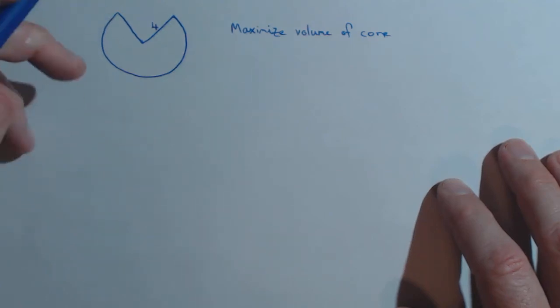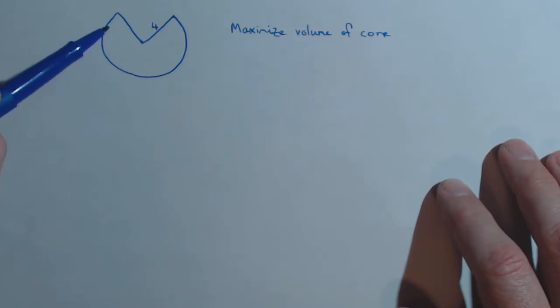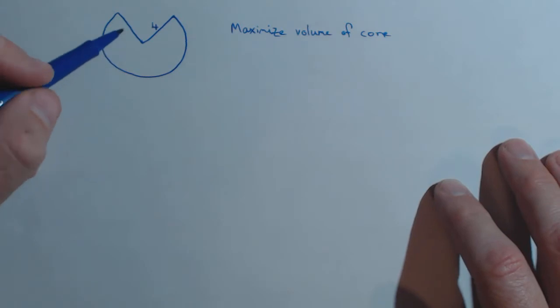In this video, we're going to talk about cutting out a sector of a circle, folding this up to create a cone, and we're going to find the maximum capacity of such a cone.